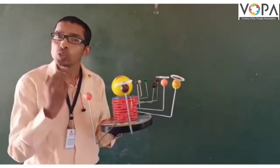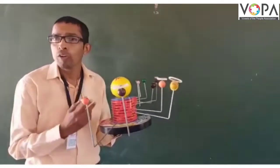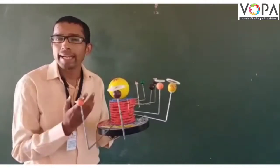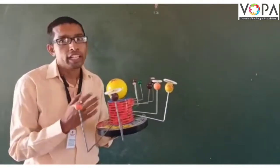Sun's size is so huge that around 13 lakh planets of the size of the Earth can be easily placed within it.